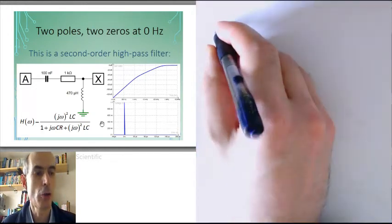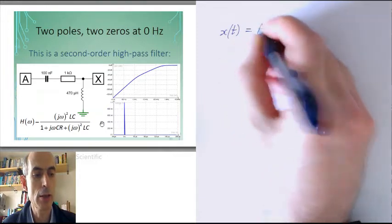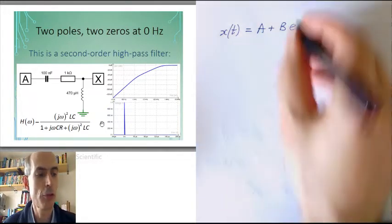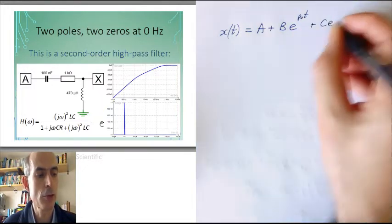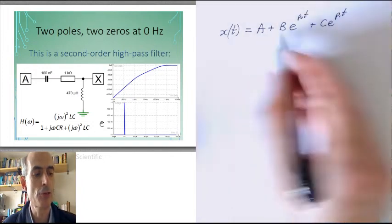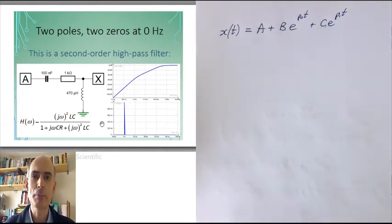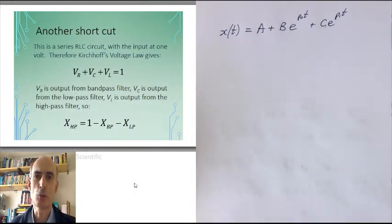Once again, we could go back to our general form, because we know that the poles are the same for all of these three circuits, and just work out the values of a, b and c, the constants, based on the initial voltages and currents, and the final voltages and currents in this circuit. But the algebra gets a little bit tedious, and once again there's a shortcut.